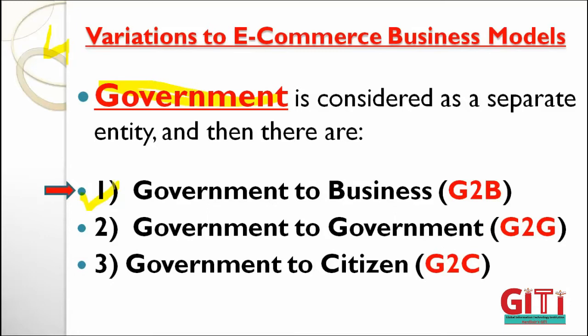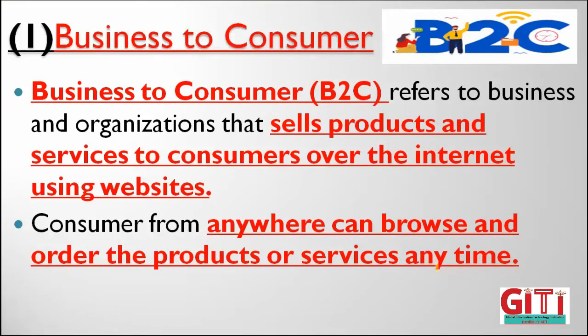Government models: first is G2B (Government to Businessmen), second is Government to Government (G2G), and third is G2C (Government to Citizen). As we go through the topic story, these will become clearer. The first example starts with Business to Consumer (B2C), where one side is businessman and the other side is consumer/customer.